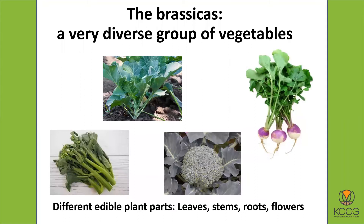The brassica family is actually very diverse. In a family like the tomato family, you're usually eating the fruits. But in the brassica family, you're eating all different plant parts — and that's the definition of a vegetable: an edible plant part. Sometimes you're eating leaves, like when you're eating collard greens, kale, turnip greens, or cabbage. And sometimes you're eating stems, like with Chinese broccoli — it has little tiny heads of broccoli, but really you're eating the stems.